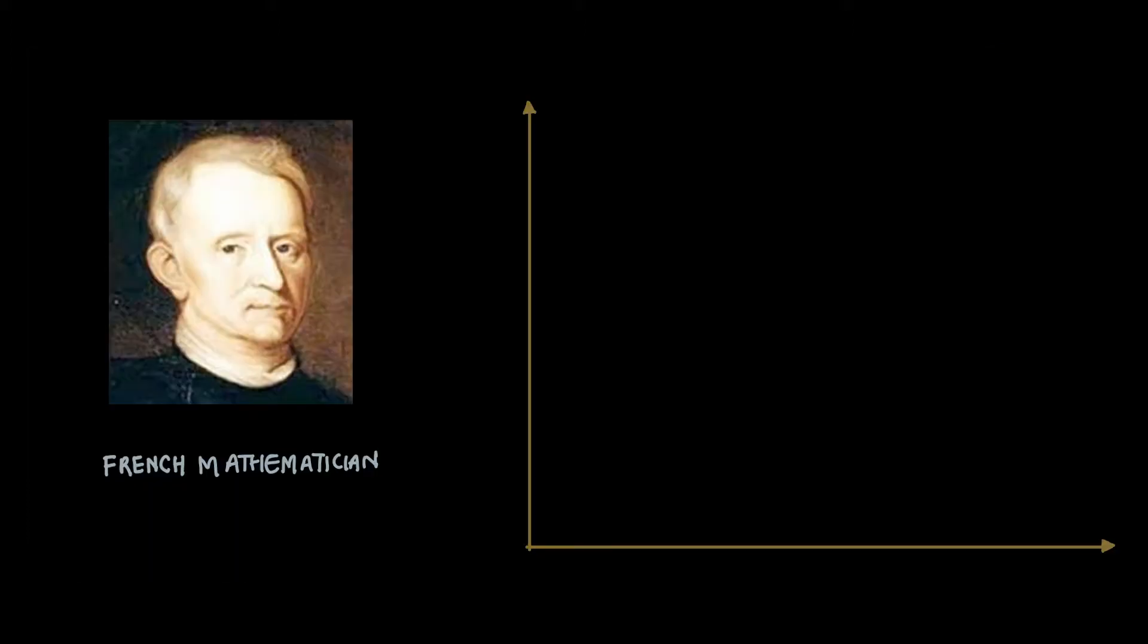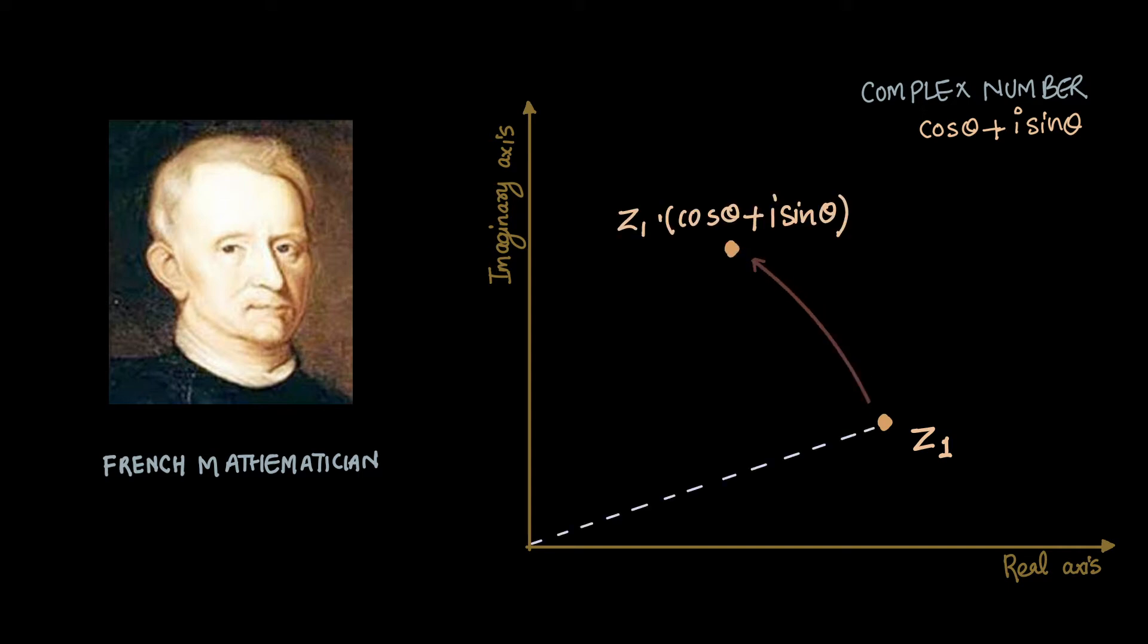In 1805, Argand showed a correspondence between complex numbers and points on a plane. One of his contributions was to show that multiplication by a complex number corresponded to a rotation of points on a plane. Here Z1 is rotated about origin by an angle theta.